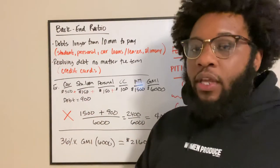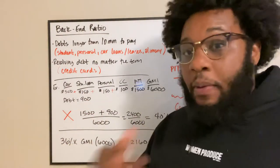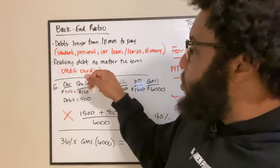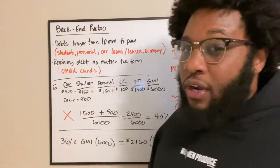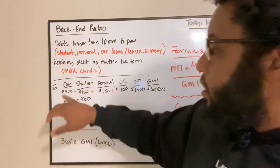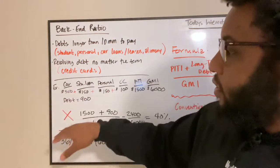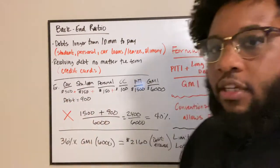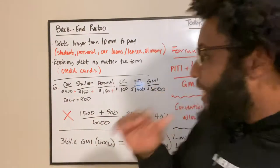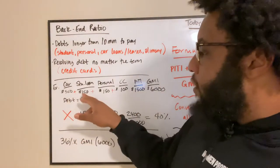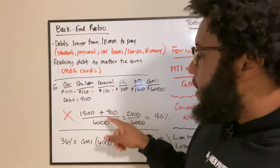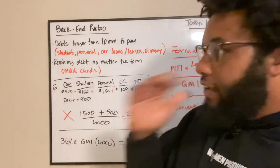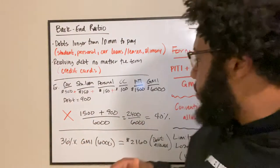Alimony as well — if you have to pay alimony for more than 10 months, that's also factored in. Revolving debt is your credit cards, and this one impacts you a lot, especially if your utilization is high. Here's an example: a person's car note is $500, their student loan minimum payment is $150, personal loan is $150, and credit card minimum is $100.